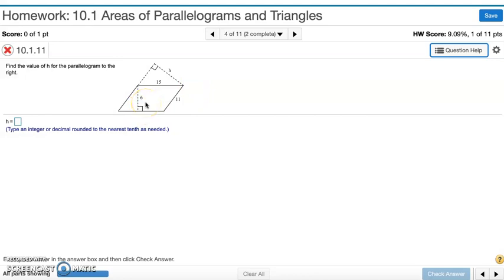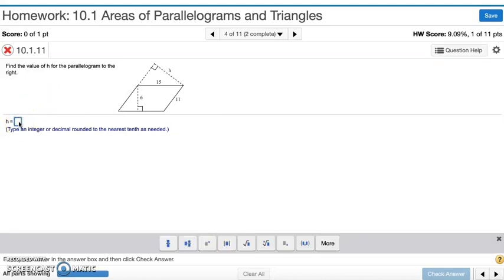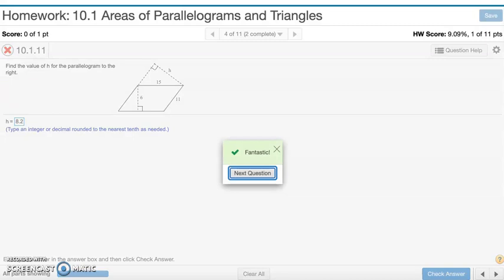So we do 6 times 15, which is 90, then divided by 11 is 8.2. So let's type that in. And that's number 4.